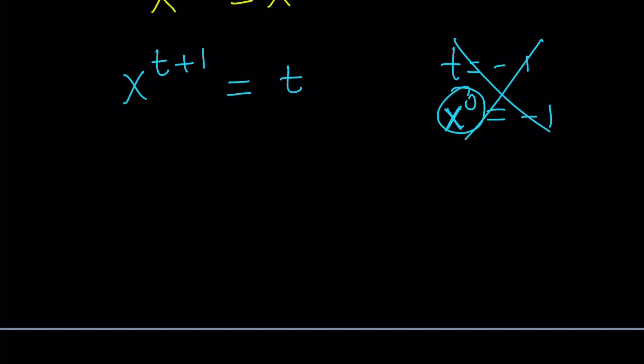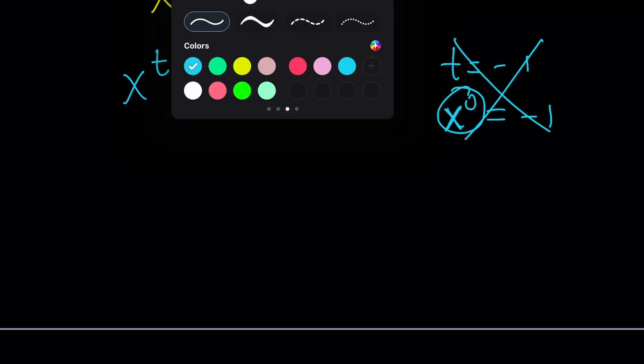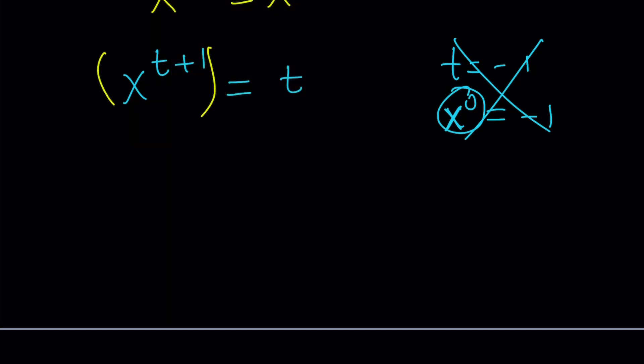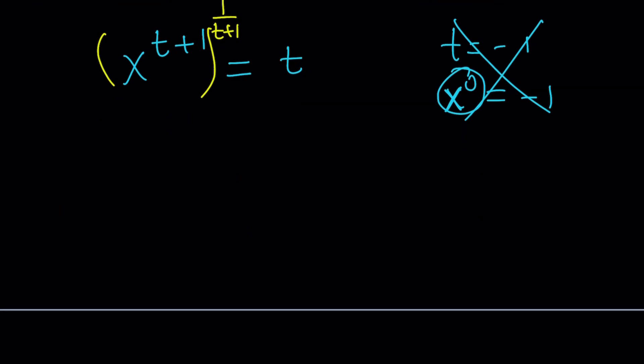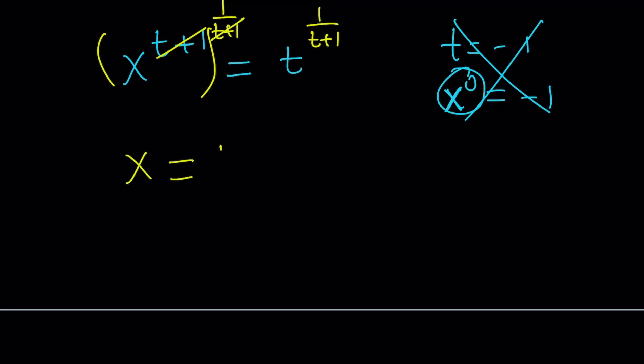So let's go ahead and solve it under those conditions. We can basically raise both sides to the power 1 over t plus 1, something that we've done before, like to simplify the 1 over y. We're kind of using the similar strategy here. And that's going to cancel out the t plus 1, and we're going to get the x from here. So x can be written as t to the power 1 over t plus 1.